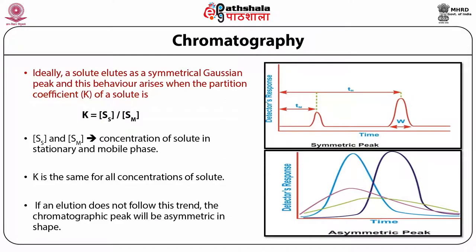Ideally a solute elutes as a symmetrical Gaussian peak, which arises when the partition coefficient k — represented as the concentration of solute in stationary phase (ss) divided by the concentration in mobile phase (sm), i.e., k = ss/sm — is the same for all concentrations of the solute. If an elution does not follow this trend, the chromatographic peak will be asymmetric in shape.